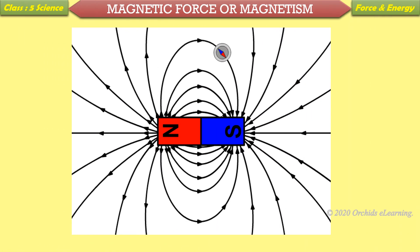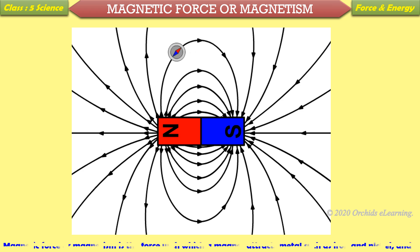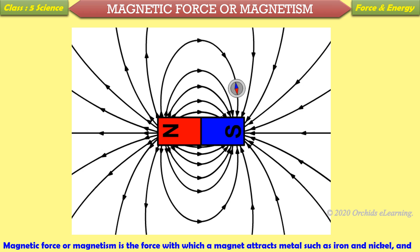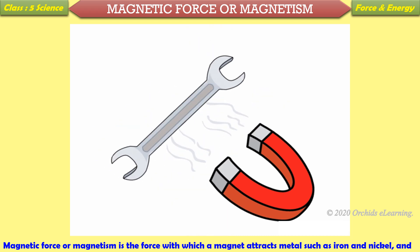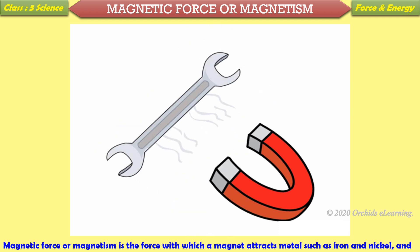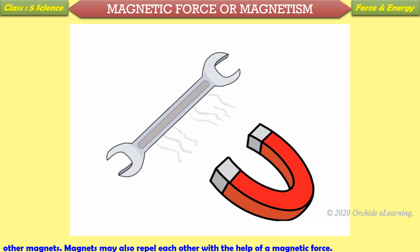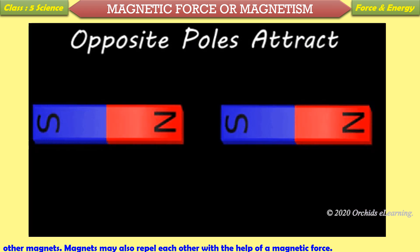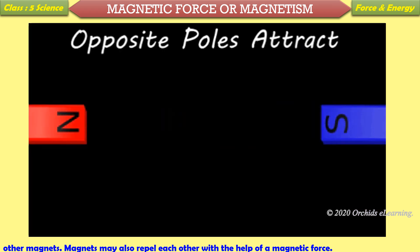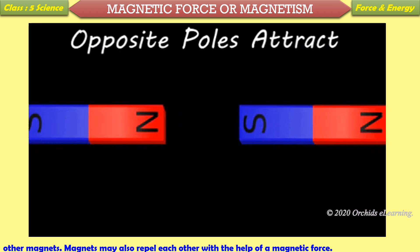Magnetic force or magnetism is the force with which a magnet attracts metals such as iron and nickel, and other magnets. Magnets may also repel each other with the help of a magnetic force.